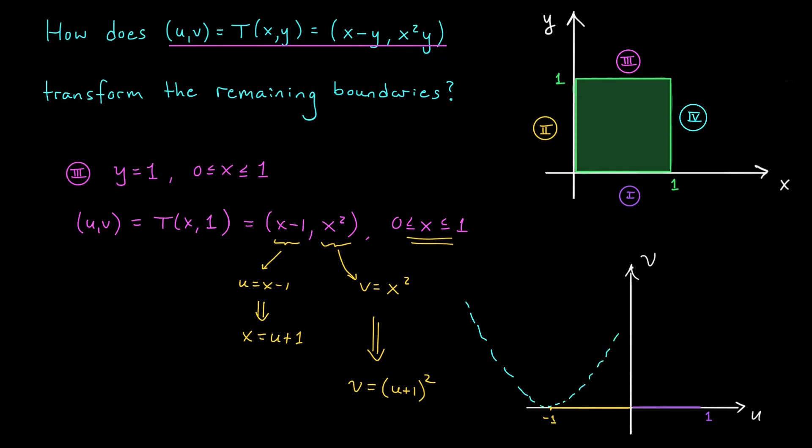Of course, we don't get the whole parabola. Since x was constrained to lie between 0 and 1, u+1 must lie between 0 and 1, and hence u must lie between -1 and 0. So we really only get this arm of the parabola here. Well, folks, let's take one more look at the regions from the last slide. I think this new information is enough to identify our image.